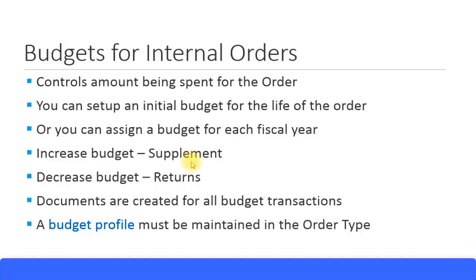Similarly, if you feel you have over-assigned the budget initially, you can reduce it — that is called 'returns' in SAP. This method is better than going inside the internal order and changing the initial budget amount, because it provides tracking. Every setting you do — assigning the initial budget, a supplement amount, or a return amount — gets tracked by individual documents, recording who made changes, at what time and date.